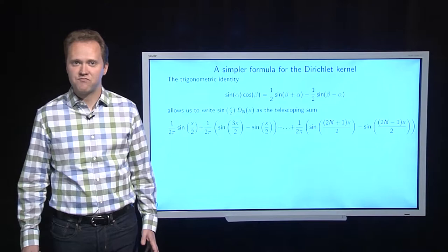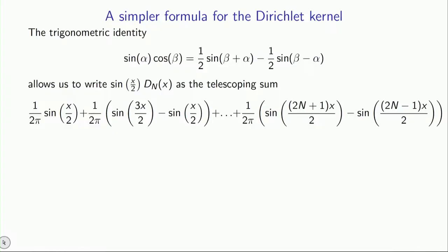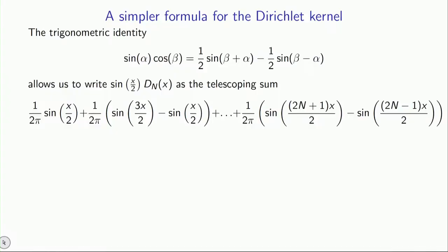Now, I wish the Dirichlet kernel had a better expression. And one can actually make that happen. Now, let's recall from trig the following trig identity. If you multiply a sine and cosine, you can expand it into the difference of two sines. How is that going to be useful?